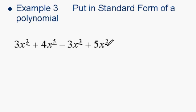The biggest exponent comes first. So we circle the positive 4x to the 5th and rewrite that.